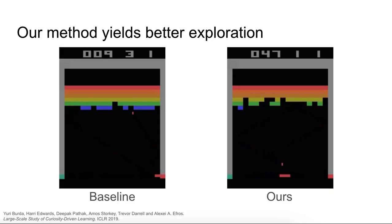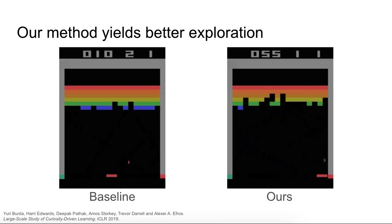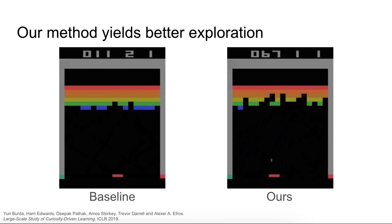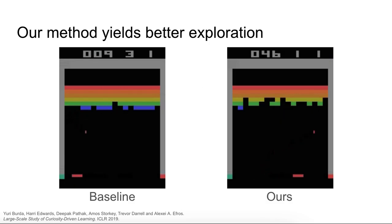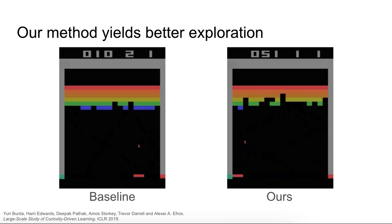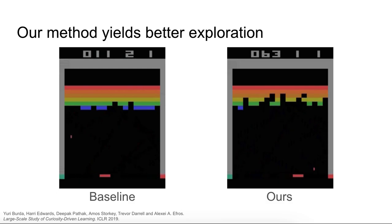We compare to curiosity via self-supervised prediction. Visual prediction can be challenging to learn, and it might not capture whether the agent understands the environment. Using our association-based form of curiosity, the agent learns to explore more efficiently in 8 of 12 Atari environments.